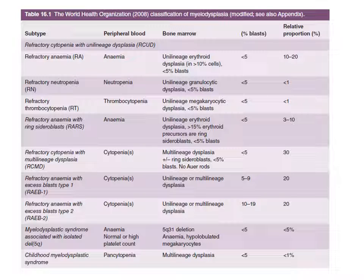Refractory anemia with excess blasts type 1: again, in the peripheral blood, we can see cytopenias; in bone marrow, we can see unilineage or multilineage dysplasia. Blast count may be more than five percent but less than ten percent. Twenty percent of patients may belong to this category. Refractory anemia with excess blasts type 2: again, we can see cytopenia in the peripheral blood, and unilineage or multilineage dysplasia in the bone marrow. Blast count is increasing — more than ten percent, specifically ten to nineteen percent. Twenty percent of patients may belong to this category.